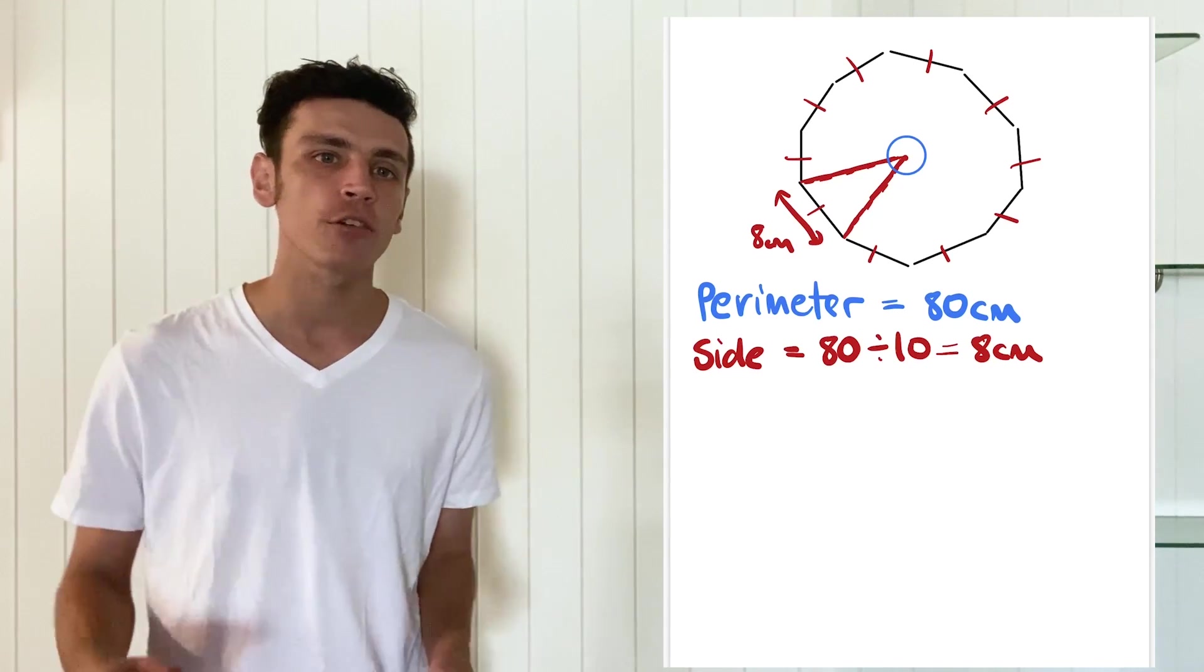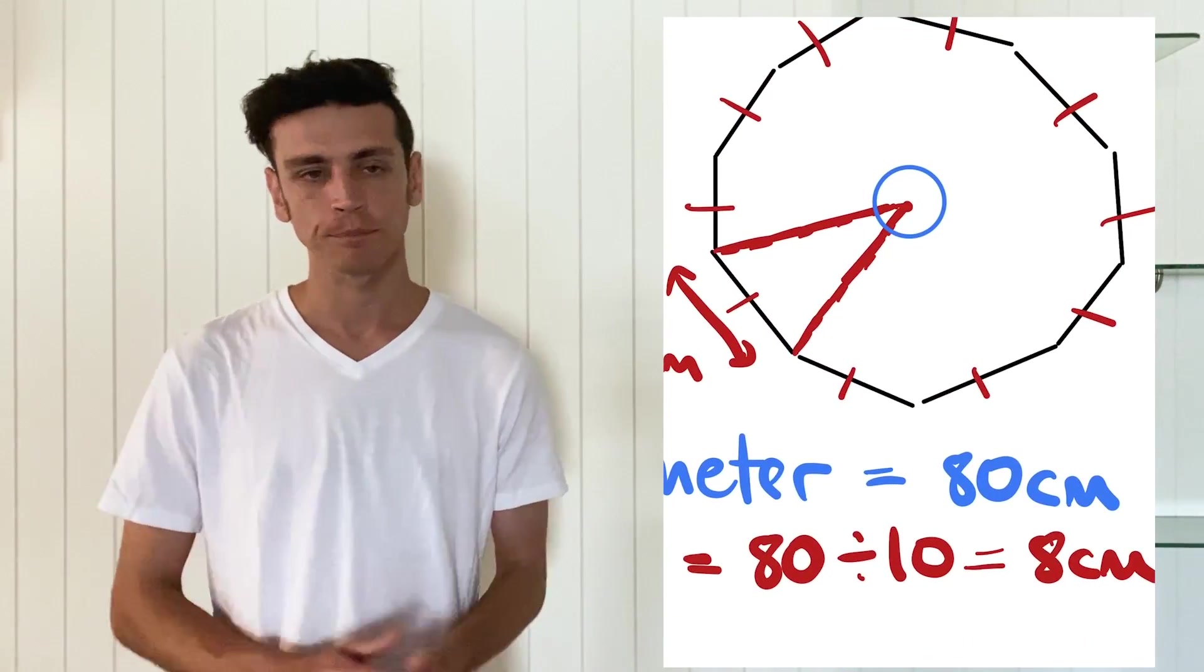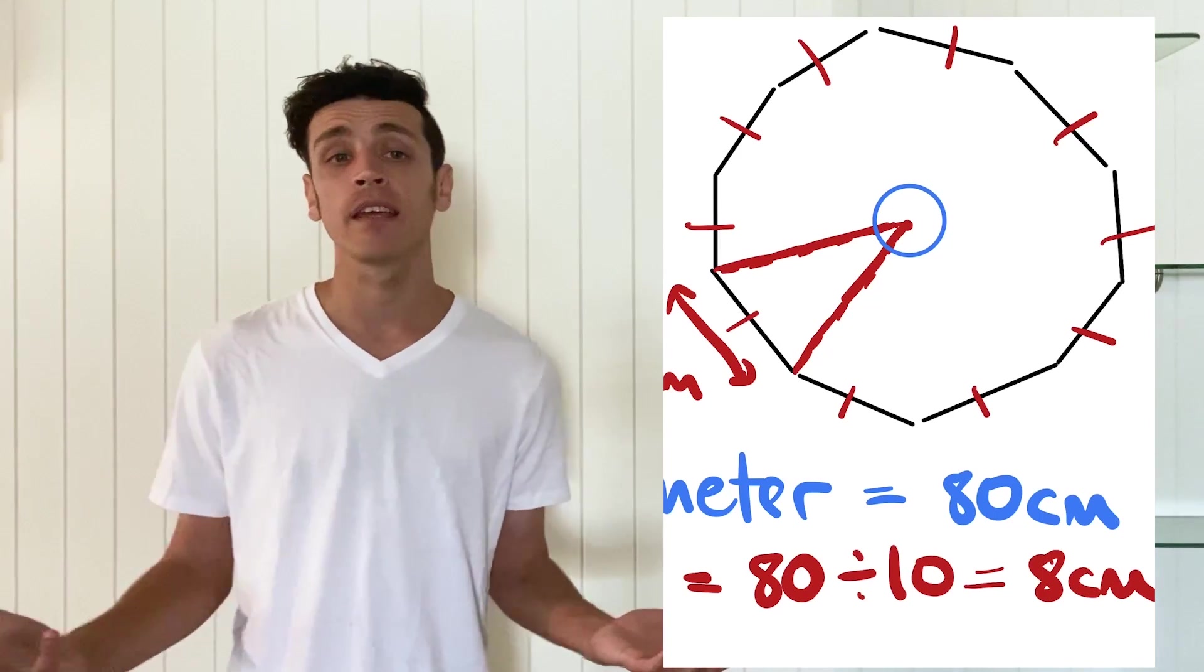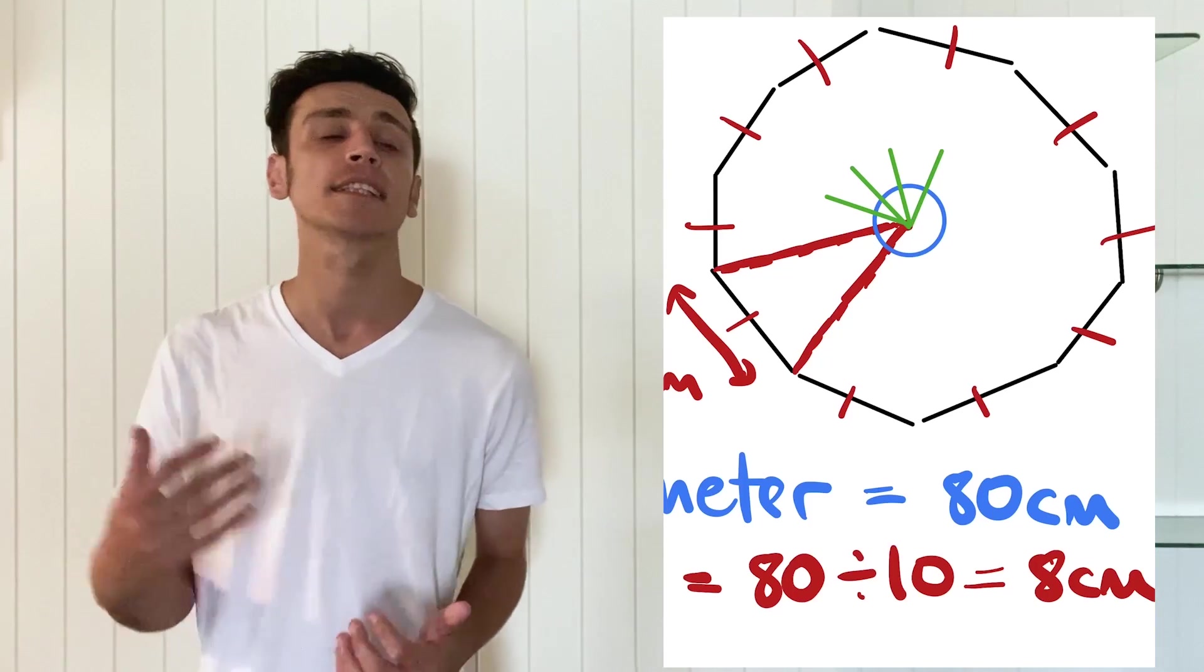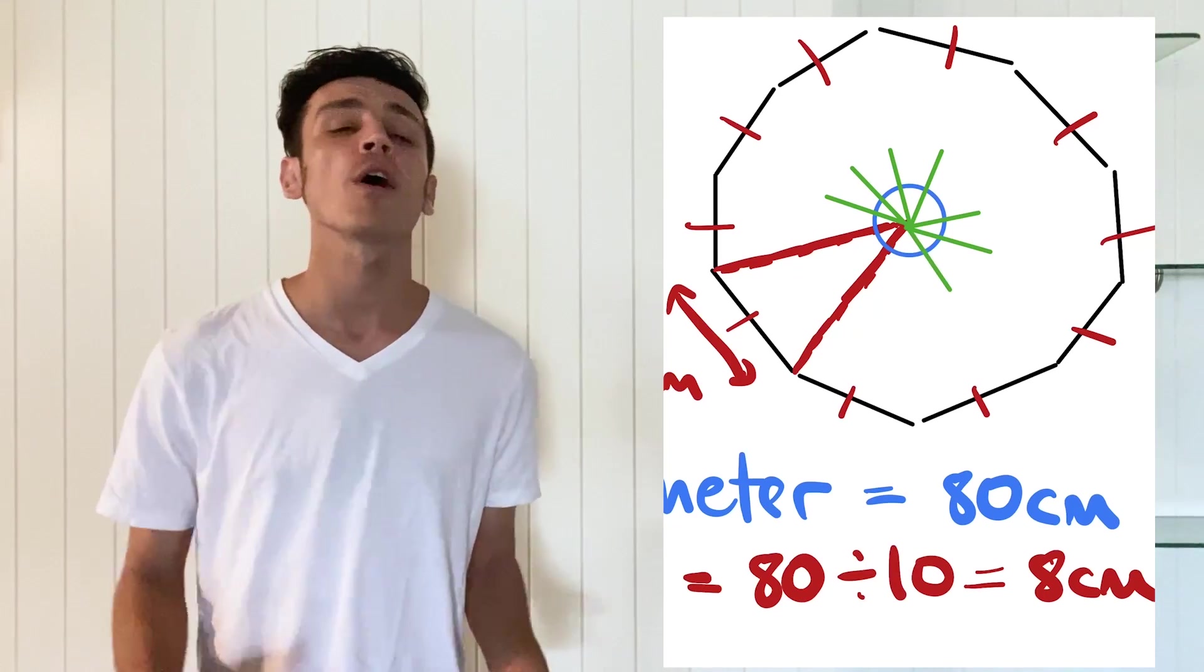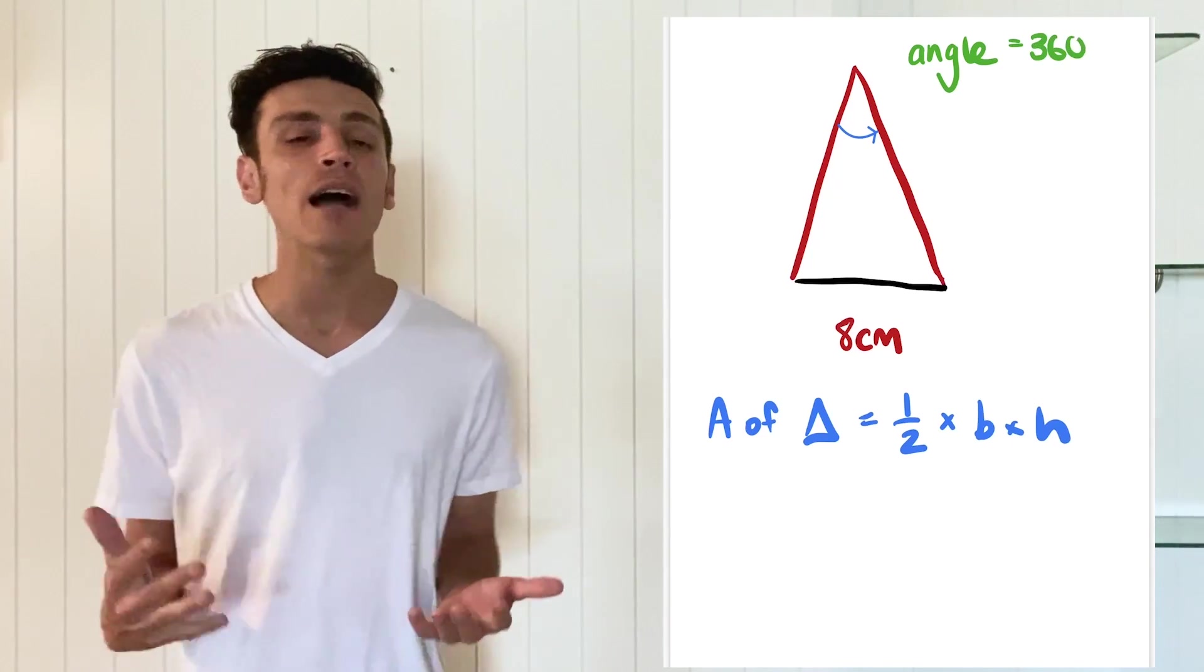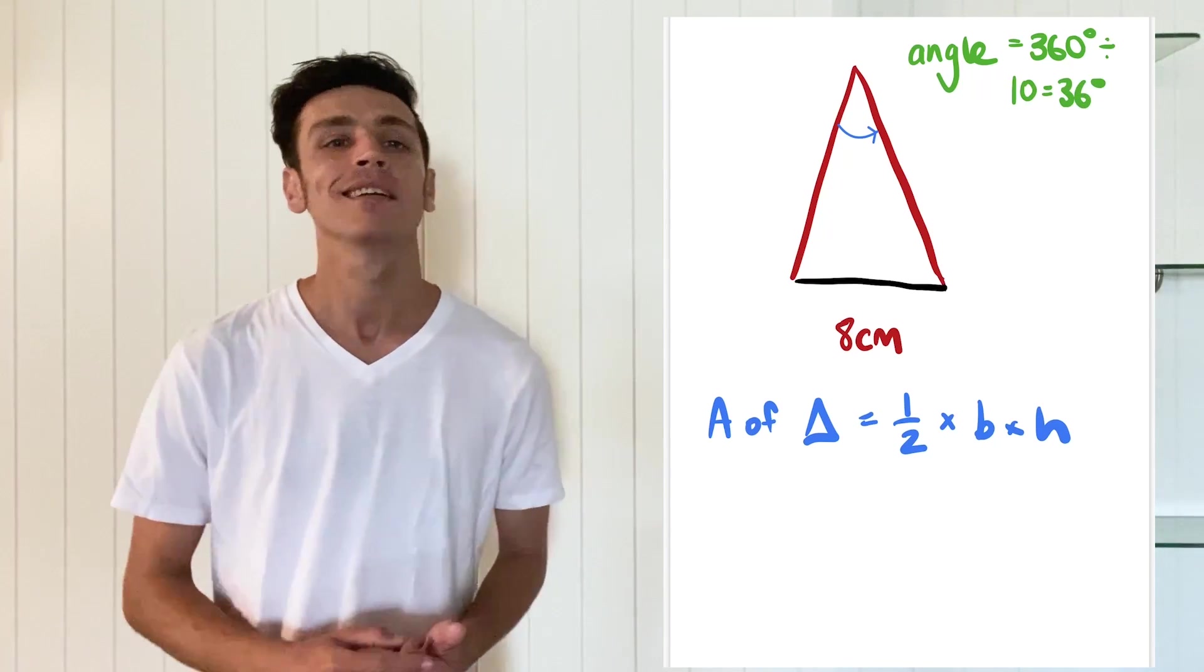So let's look back at our decagon with all our triangles in it. Now what happens if I create a little circle in the middle? Well what we've actually got are angles. So we can actually work out the angle of that part of the triangle for each of them because they're going to be even. And we know that the degrees of a circle is always going to be 360 degrees. And remember just like our sides on the outside, this is being split up into 10 sections because we have 10 triangles. So to work out the degrees of this part of the triangle we would take our 360 degrees and divide it by 10, and that will give us 36 degrees. So now we have a triangle that has a base of 8 centimeters and we have a top angle that is at 36 degrees.